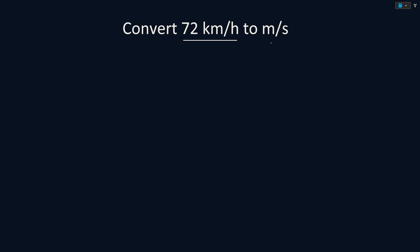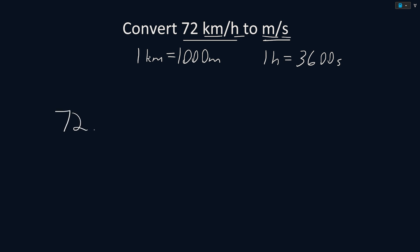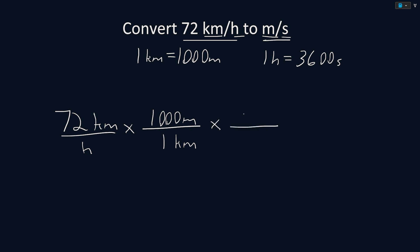Convert 72 kilometers per hour to meters per second. We know that 1 kilometer is equal to 1,000 meters, and that 1 hour is equal to 3,600 seconds. So to convert our units, we start with 72 kilometers per hour and multiply by a fraction that cancels out our units. We'll cancel out the kilometers by putting meters on top and kilometers on the bottom. Then we cancel out the hours by multiplying by another fraction, putting hours on top and seconds on the bottom. Solving this, the kilometers cancel out and the hours cancel out, leaving us with meters and seconds. This gives us that 72 kilometers per hour is equal to 20 meters per second.